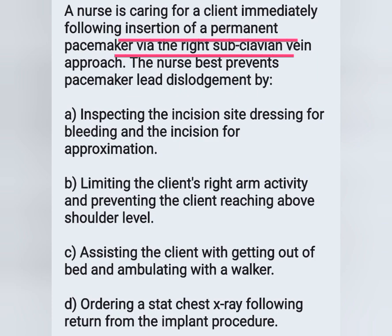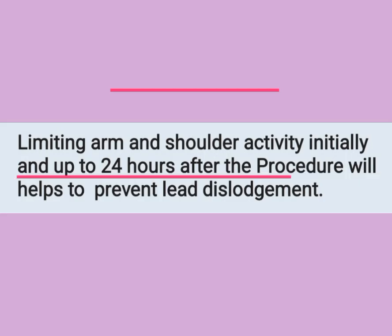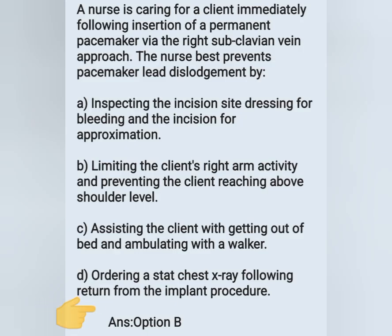The nurse is caring for a patient with a permanent pacemaker immediately after the procedure, done via the right subclavian vein. The subclavian vein is the vein of the upper extremities. Limiting arm and shoulder activity initially and up to 24 hours after the procedure will help prevent lead dislodgement. The correct answer is option B.